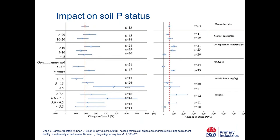Looking at the role of organic amendments on soil phosphorus status as measured by Olsen P: where we have the lowest initial available P — below 5 mg/kg — is where we have the greatest impact on soil available phosphorus. It makes sense that where we're adding organic amendments, usually with a nutrient content, is where we tend to have the greatest impact on the net result in soil.